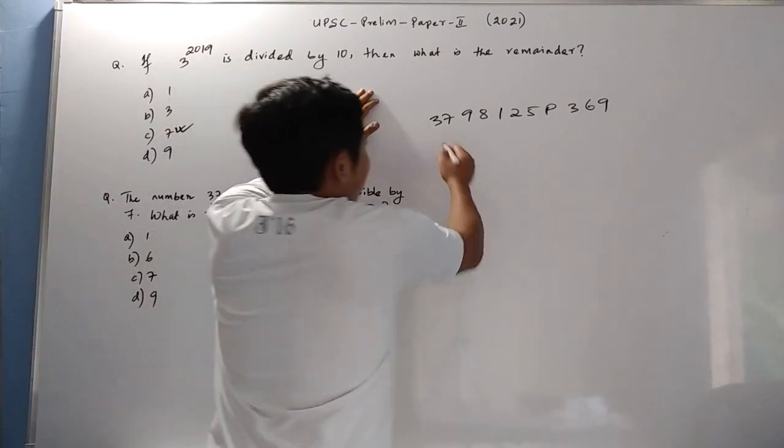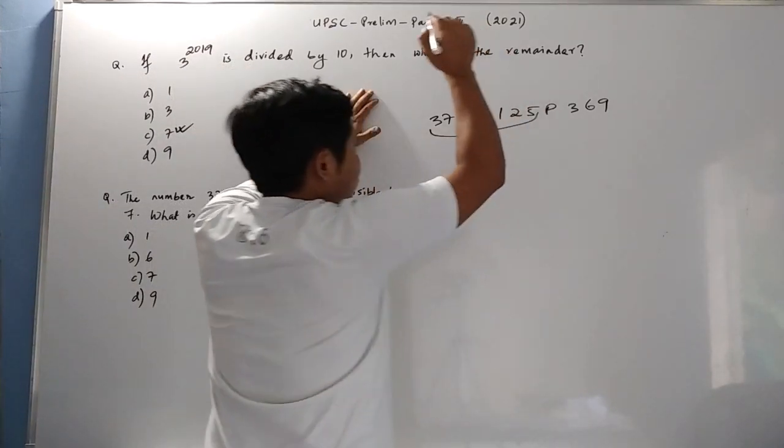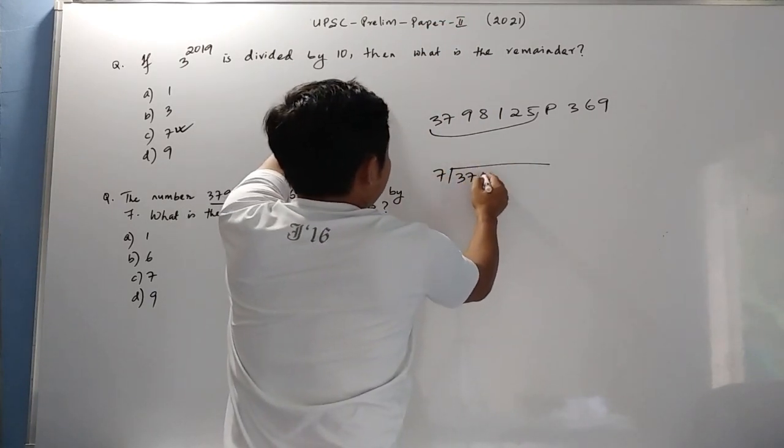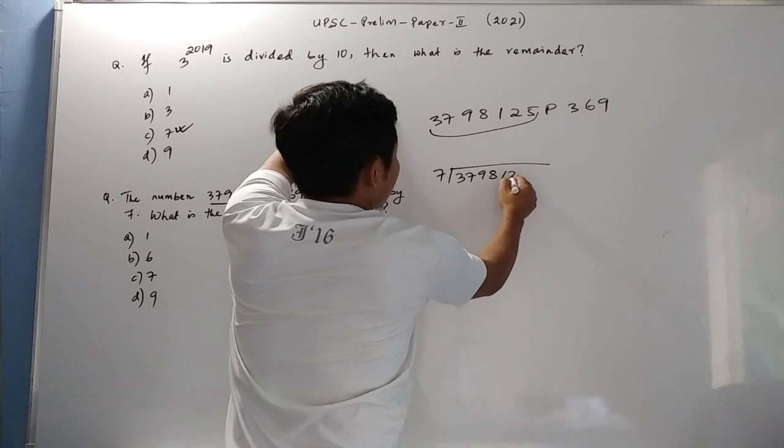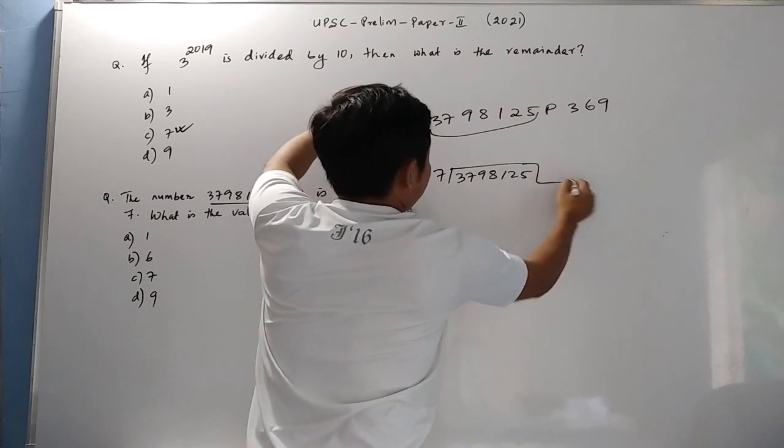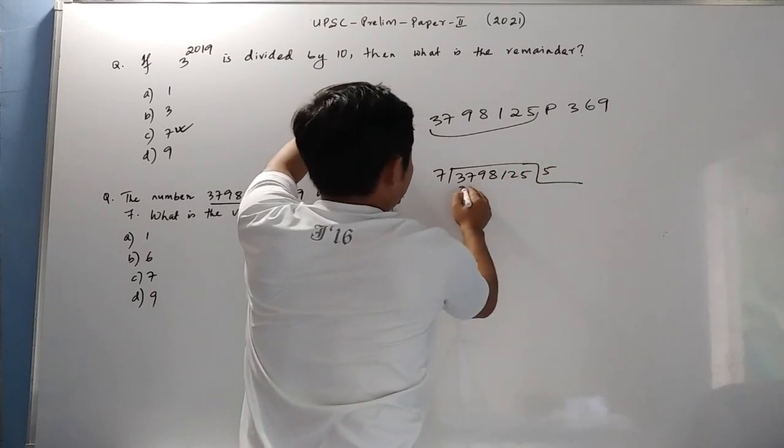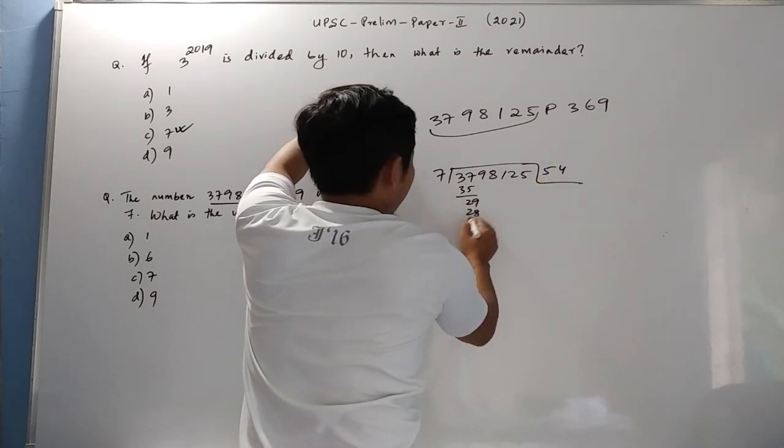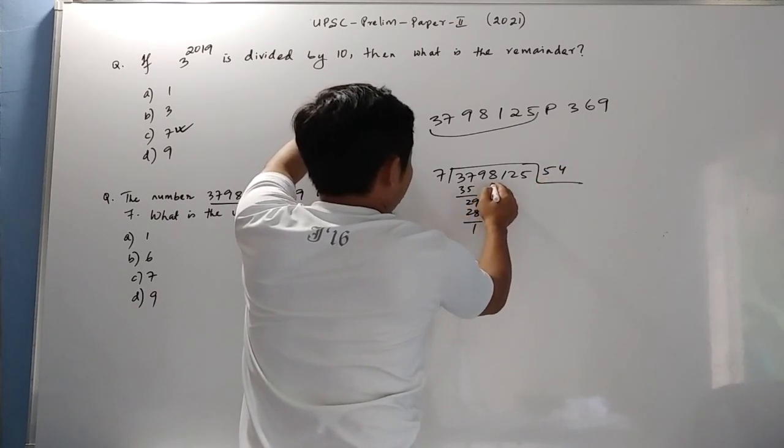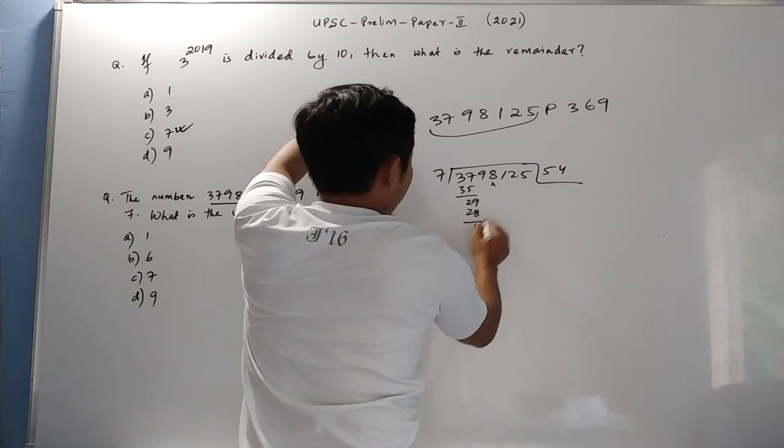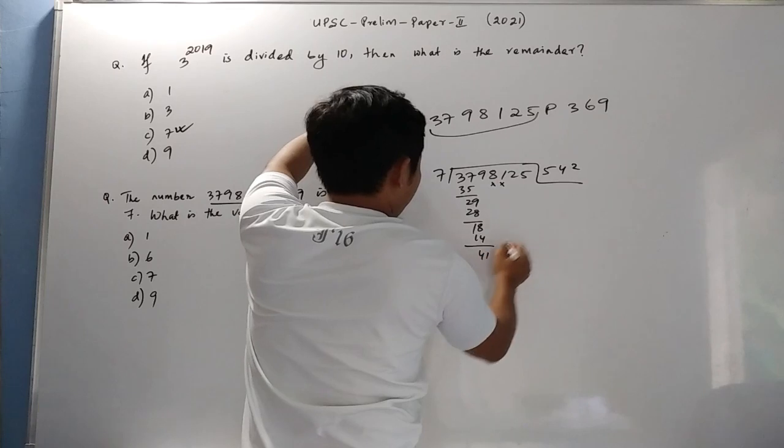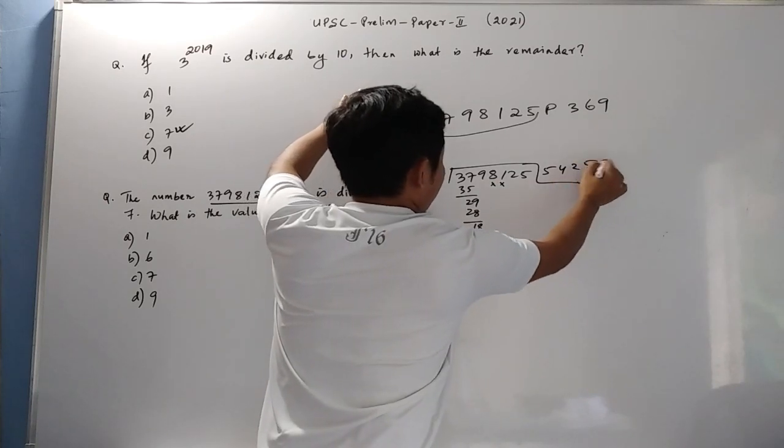For the shortcut, let us divide this whole thing by 7.